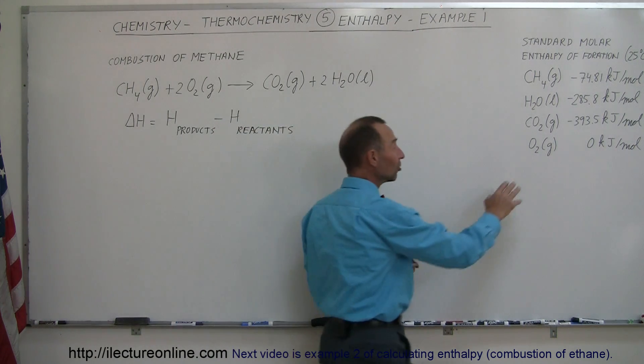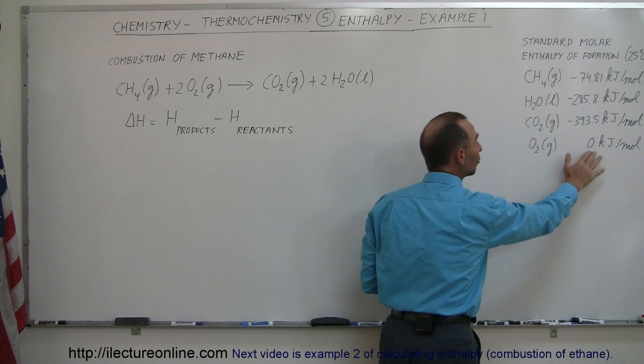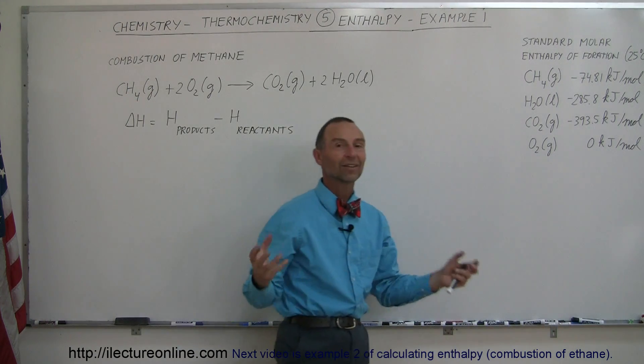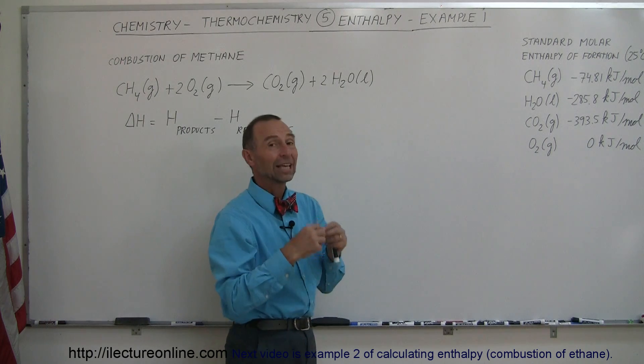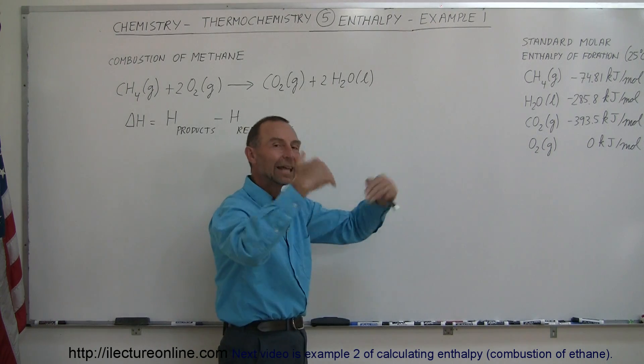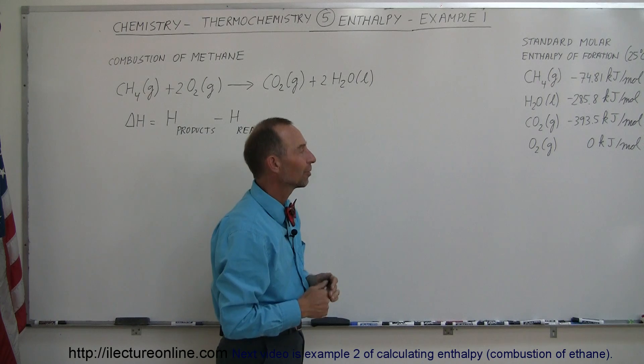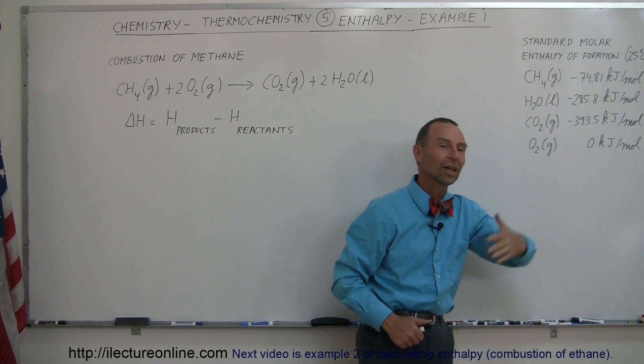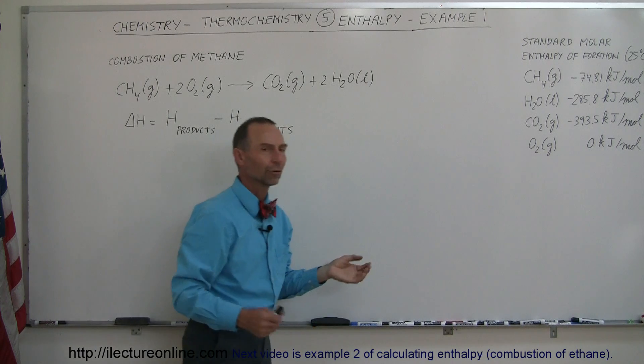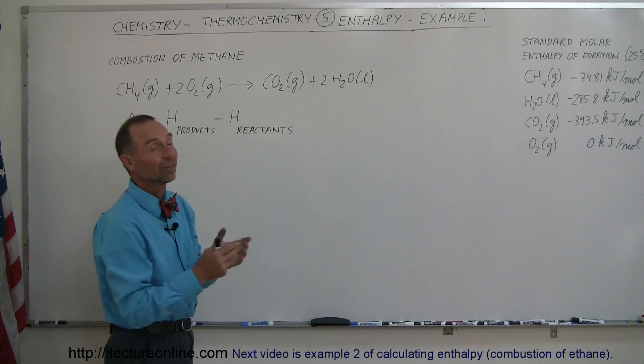And interestingly enough, oxygen gas in the diatomic state is zero kilojoules because that is its most natural, lowest energy state. If you take oxygen and pull it apart, you need to add energy to it, not take energy away from it. So oxygen gas in the diatomic state is in its most natural state and therefore the enthalpy of formation for that is simply zero.